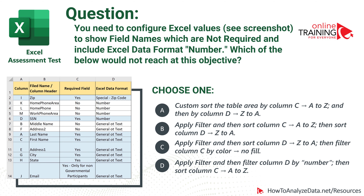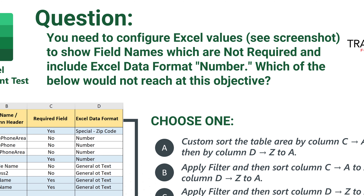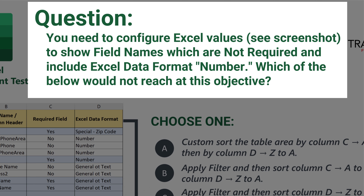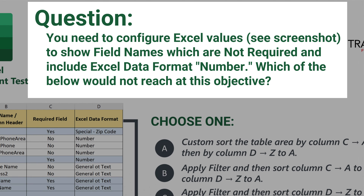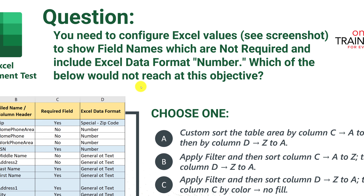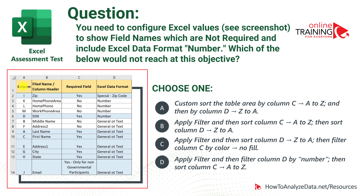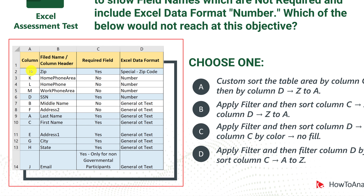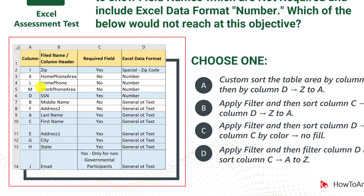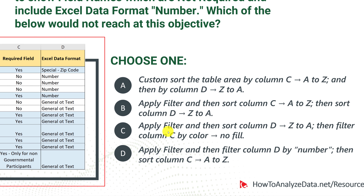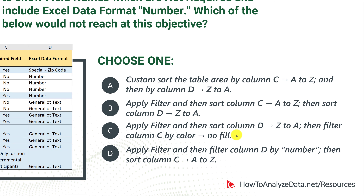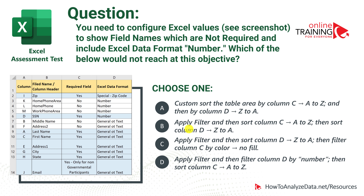Now let's look at a very tricky Excel assessment test question testing your knowledge of sorting and filtering. You need to configure Excel values to show field names which are not required and include Excel data format 'number.' Which of the choices below will NOT reach this objective? Three choices do reach the objective — you're looking for the one that does not. The data has four columns, some rows highlighted in blue, and Choice C includes the option of filtering by color with no fill.